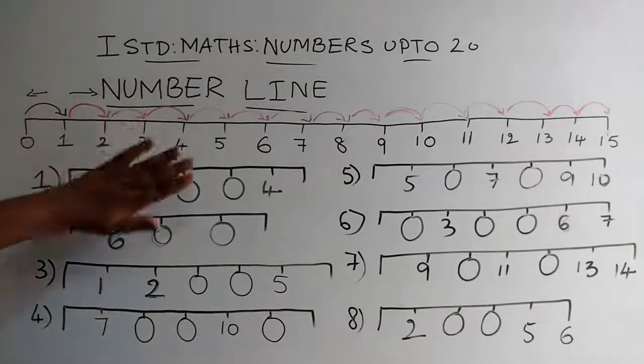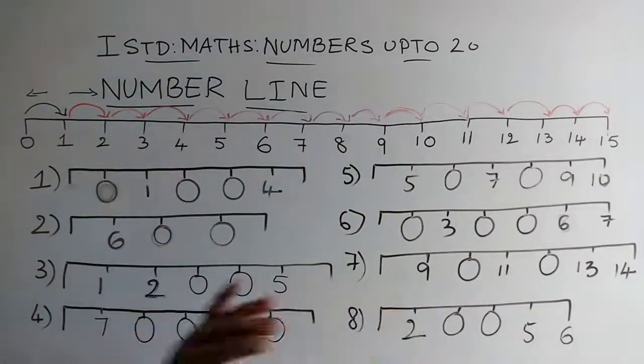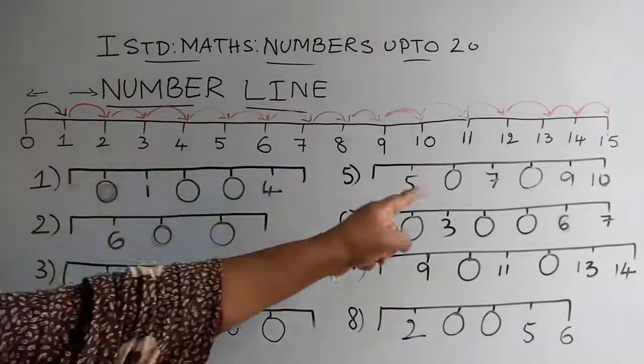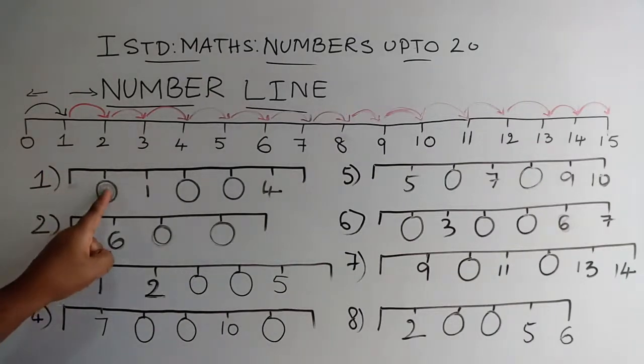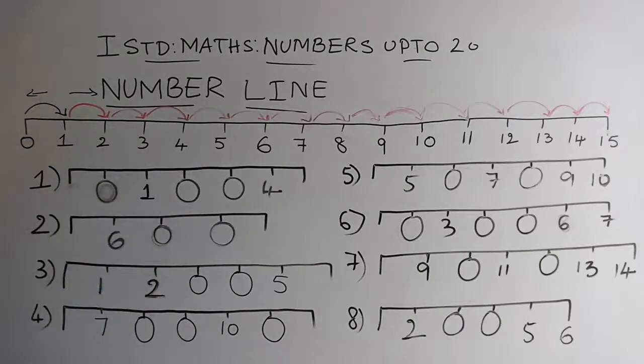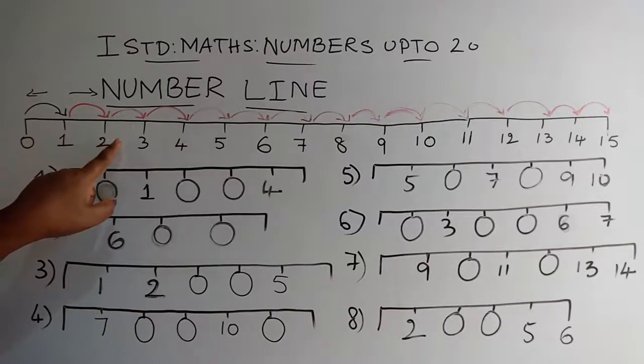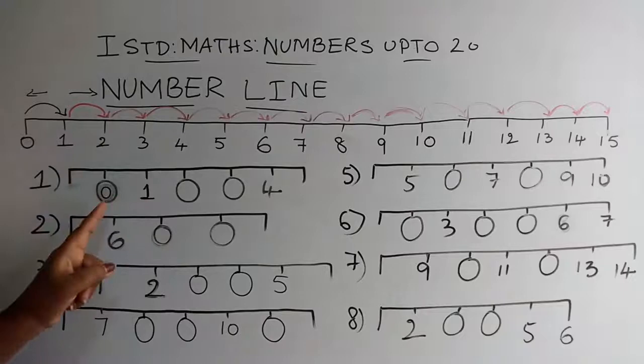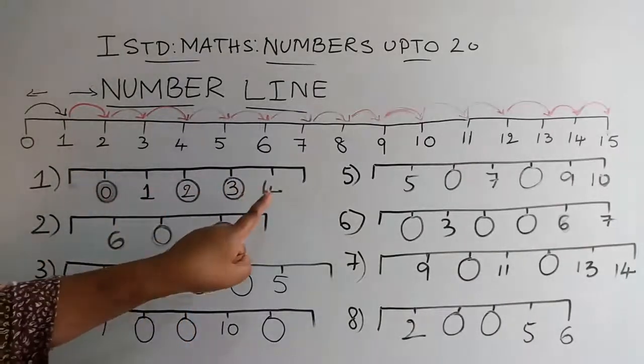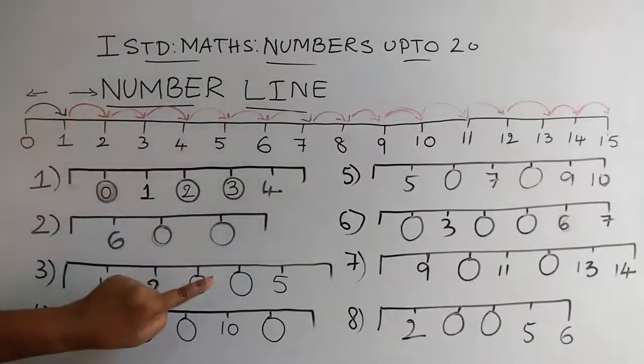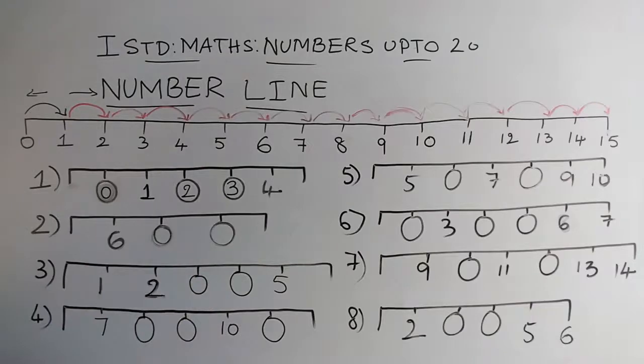We observe this number line and try to answer these boxes, the small blanks we have here and there that we will try to fill. Now, I'll go to the first one. I have a blank here and then 1. So let me observe this number line. What do we have before 1? It is 0, 0, 1, 2, 3, and 4. See the number line and try to fill these blanks.